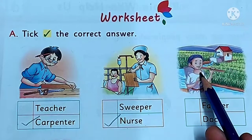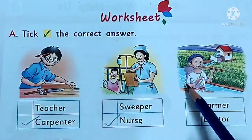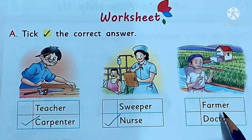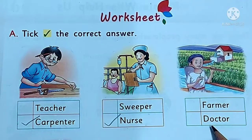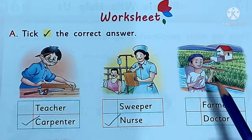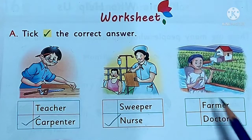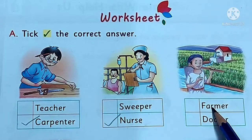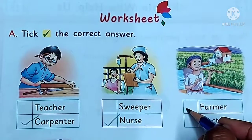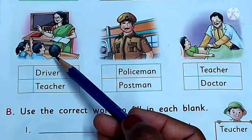See the third picture. Who is he? Farmer or doctor? Who is he? Farmer. Farmer works in the fields. Next.